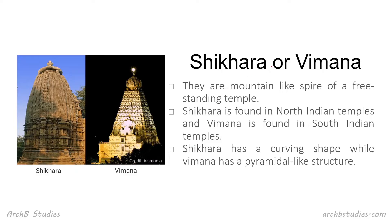Next we have Shikhara or Vimana — the mountain-like spire of a free-standing temple. Shikhara is found in North Indian temples while Vimana is found in South Indian temples. Shikhara has a curving shape, while Vimana has a straight pyramidal structure.